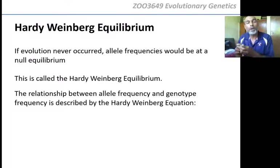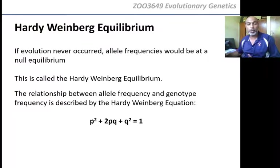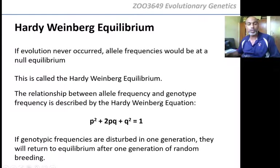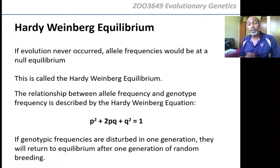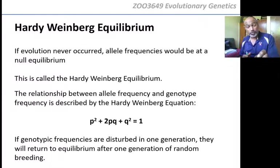This equation brings both allele frequencies and genotype frequencies into the same formula. It tells us the relationship between genotype frequency and allele frequency, and you know that it's p² + 2pq + q² = 1. That means if you add all the genotypes — the homozygous dominants, heterozygotes, and homozygous recessives — they will be equal to 1. If the genotype frequencies are disturbed in one generation, they have to return to equilibrium after one generation of random breeding.